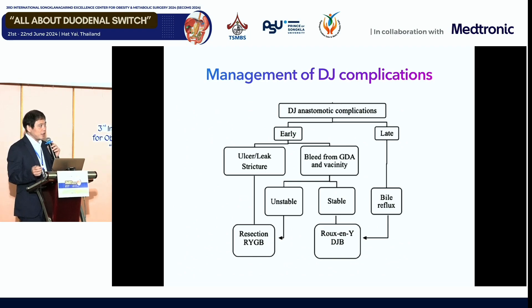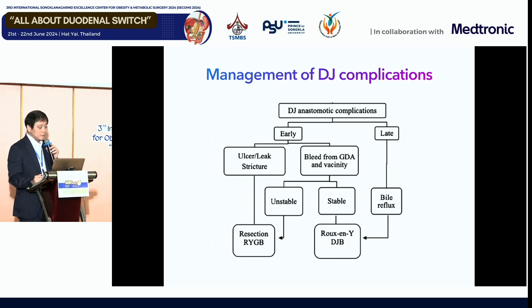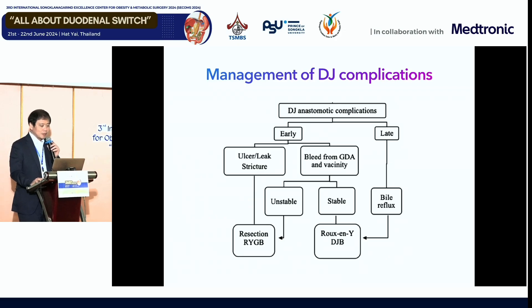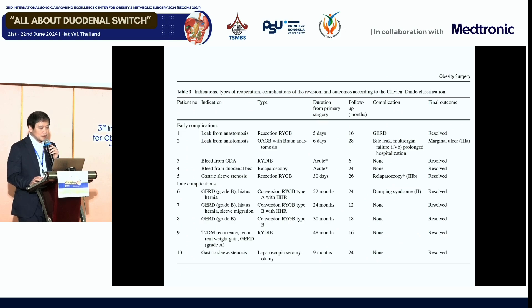For DJ anastomotic complications: for early cases, we had two leaks. If it's ulcer, leak, or stricture, we convert to resectional RYGB. If it's bleeding from the gastroduodenal artery branch and the patient is stable, we can convert to Roux-en-Y DJV; if unstable, maybe resectional. For complications not related to DJ anastomosis, like bile reflux, we convert to Roux-en-Y DJV. This covers the total 10 cases we encountered.